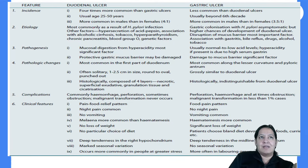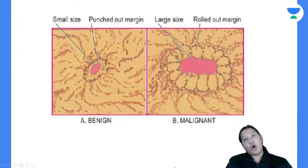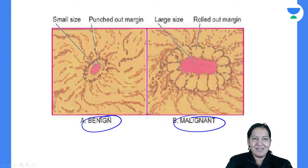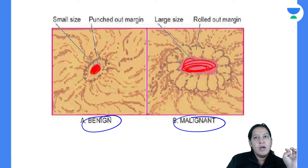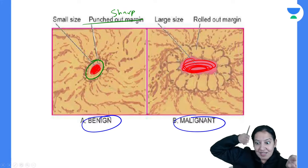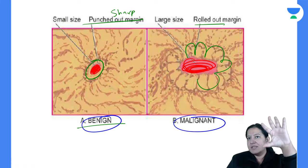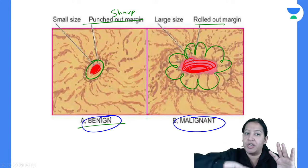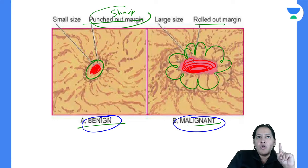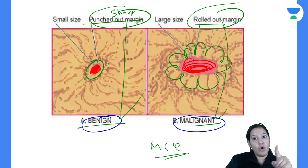So basically we have two types of peptic ulcer: duodenal ulcer and gastric ulcer. Duodenal ulcer is more common, gastric ulcer is less common. The gross appearance differs based on whether it is a benign or malignant ulcer. You have to see the margins of the ulcer. If the margins are punched out — sharp margins — it is a benign ulcer. If the margins are rolled out and not sharp, it is a malignant ulcer. Learn: punched out margins = benign ulcer; rolled out margins = malignant ulcer. These are MCQs.